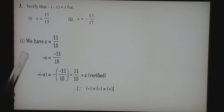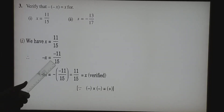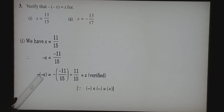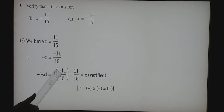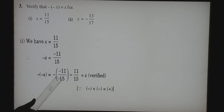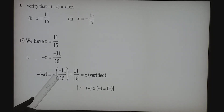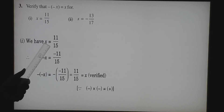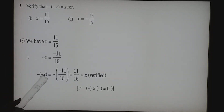Minus X is becoming minus 11 by 15. Now we substitute this value. Outside the bracket we have minus, so it is minus of minus X. Substituting: minus of minus 11 by 15. Simplifying the bracket — minus into minus equals plus — so we get 11 by 15, which is the X value. That is why minus of minus X equals X. It is verified.